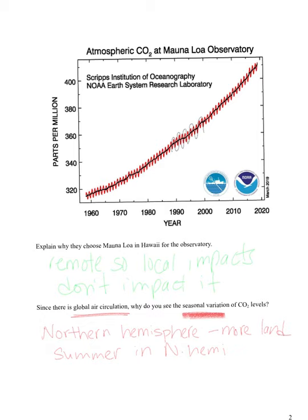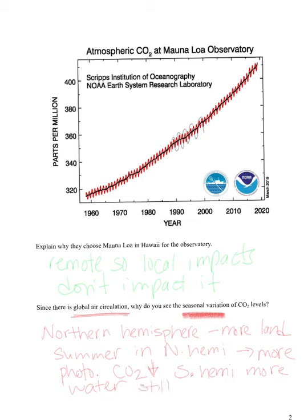...there is more photosynthesis happening, so CO₂ levels go down. You might ask about the southern hemisphere having winter at that time — but the southern hemisphere is mostly water. Because of that water coverage and global circulation, there's still plankton and aquatic organisms doing photosynthesis even in the cold. So the southern hemisphere still has a good amount of photosynthesis happening.